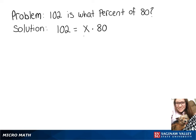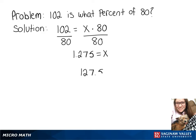Now we're going to divide both sides by 80 to get x by itself. We then have an x value of 1.275, and to get our percentage we need to multiply that by 100, which gives us 127.5 percent.